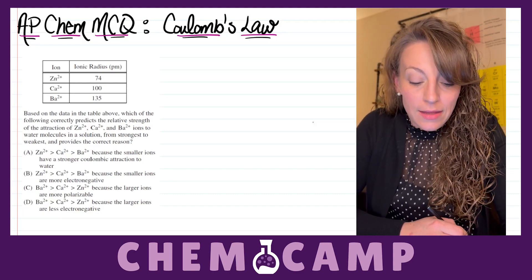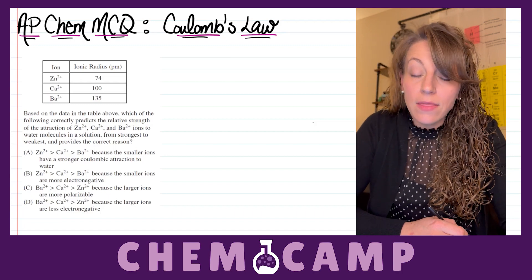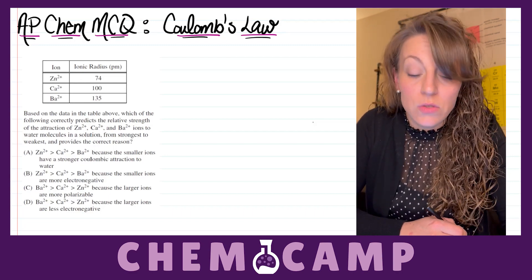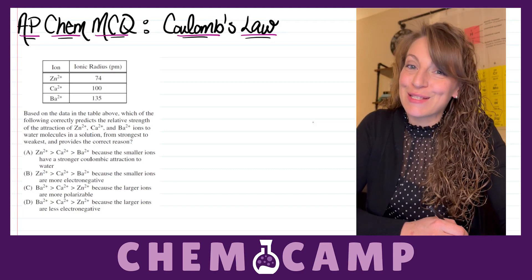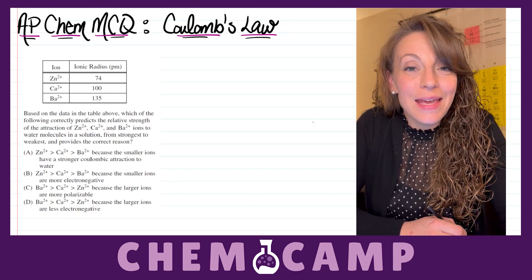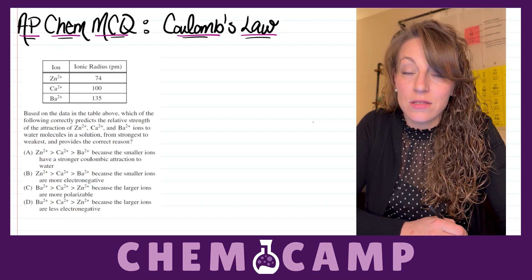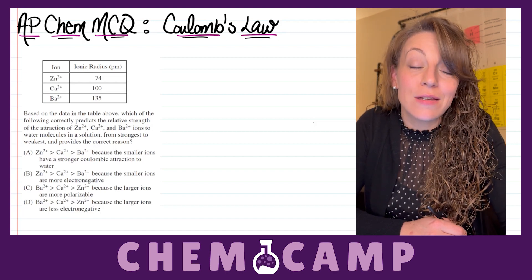They give us a table that lists the ions and their ionic radius in picometers, where the Zn²⁺ at 74 picometers is the smallest, and the Ba²⁺ with a radius of 135 picometers is the largest.